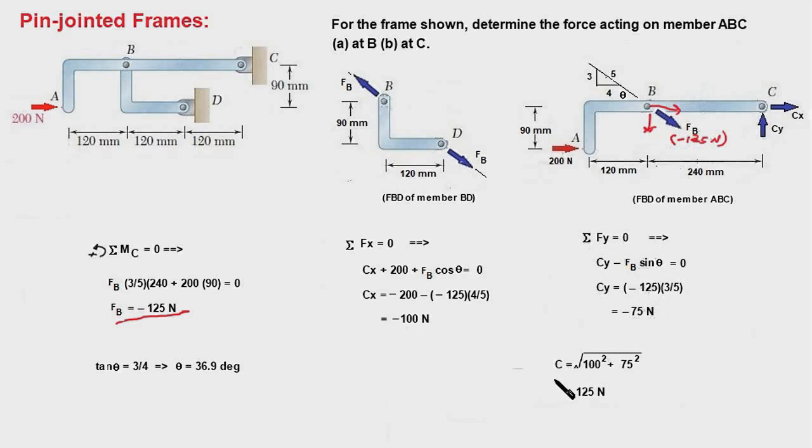So C is the square root of minus 100 squared plus minus 75 squared, and that will work out to 125 N. So what is the direction of C? In reality, Cx is in this direction, Cy is in vertically downward direction. This is Cx, this is Cy, and therefore C is this force making an angle of theta here, which is 36.9 degrees.